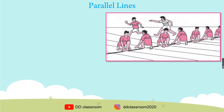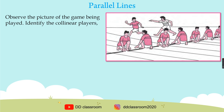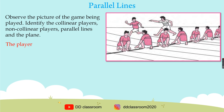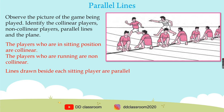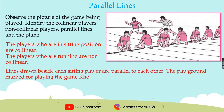Observe the picture of the game being played. Identify the collinear players, non-collinear players, parallel lines, and the plane. The players who are in sitting position are collinear. The players who are running are non-collinear. Lines drawn beside each sitting player are parallel to each other. The playground marked for playing the game kho-kho is a plane.